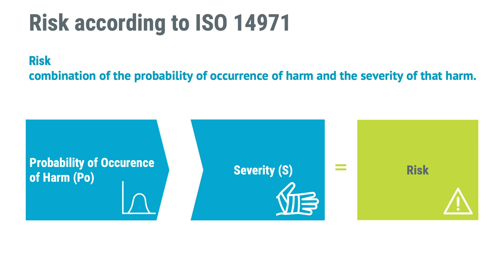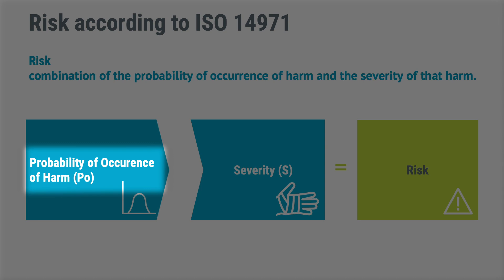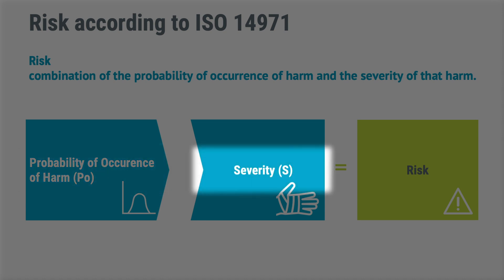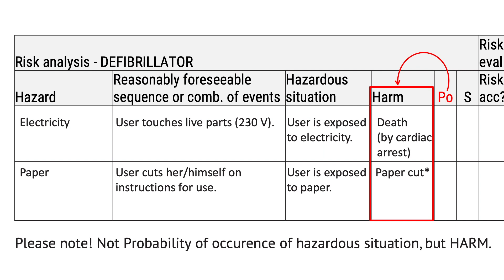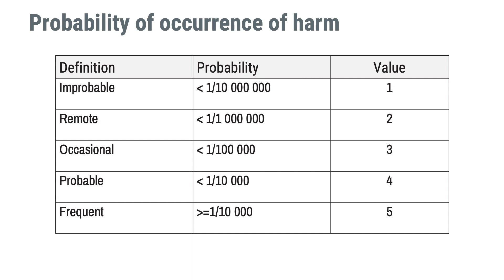Something that is highly unlikely to happen but with severe consequences will get a median risk level, and the same could be said about a risk that is likely to happen but with very low severity. The probability of occurrence of harm is commonly abbreviated as PO, and severity is abbreviated as S. The most common way to assess PO is semi-quantitatively, so that a certain probability of harm arising is related to a number. For example, if the probability is greater than 0.01%, that may be represented by a 5 on a scale from 1 to 5. And if the probability is less than 1 in 100,000 patients, that would mean PO is 3 on the same scale.